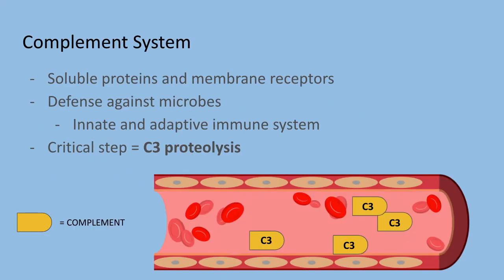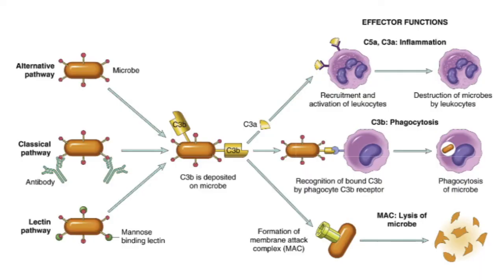Another important component of the inflammatory response is the complement system — a system of soluble proteins and membrane receptors that function mainly in the defense against microbes and in pathologic inflammatory reactions. In total, the system consists of more than 20 proteins, some numbered C1 through C9, though C3 is most important. Complement proteins are present in inactive forms in the plasma, and many become activated to form proteolytic enzymes that degrade other complement proteins in an enzymatic cascade capable of tremendous amplification. The critical step in complement activation is the proteolysis of C3, the third and most abundant component.